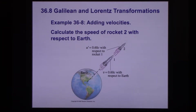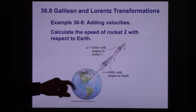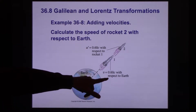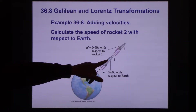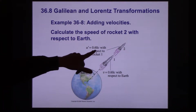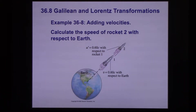Moving on, let's take a look at special relativity's prediction — the formulas we have to use in order to add velocities. Here is Earth, and we have spacecraft number one traveling at 0.60c with respect to the Earth. There's a second rocket launched from the first one, and this rocket is moving at 0.60c with respect to rocket number one.